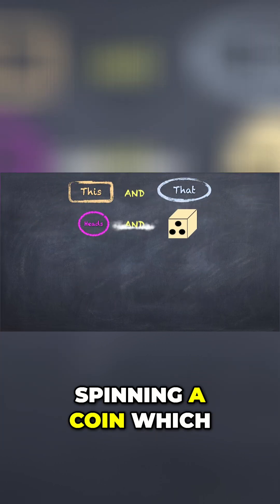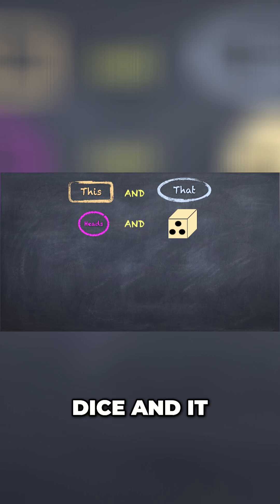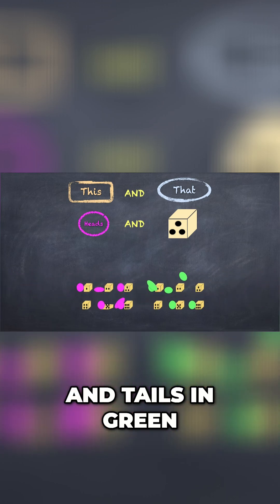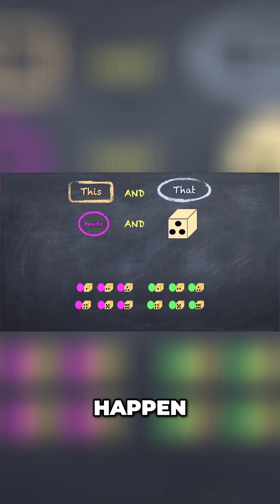We'll start with the probability of spinning a coin which gives us heads, and at the same time, we roll a dice and it shows a 3. What are the chances of that happening? Here we've got heads in pink and tails in green, and you can see that there are 12 possible combinations of heads and tails and dice roll outcomes that could happen.